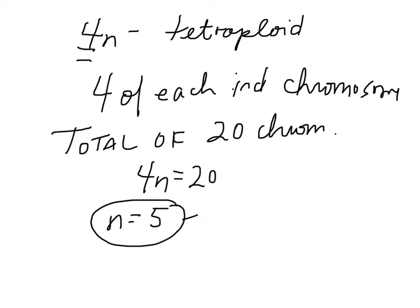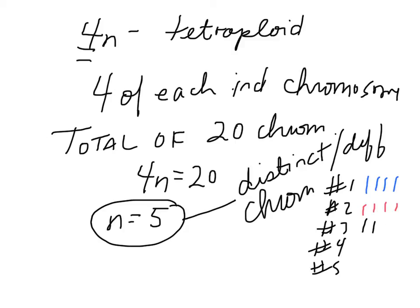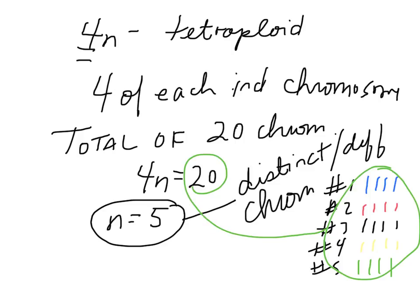n is the number of distinct or different chromosomes. So you have chromosome number 1, chromosome number 2, chromosome number 3, chromosome number 4, chromosome number 5. And you would have 4 copies of each. I don't know if you can really see that yellow color — how about we try green? If you total up the total number of chromosomes there, you see that you have a total of 20, and you have 4 of the same chromosomes.